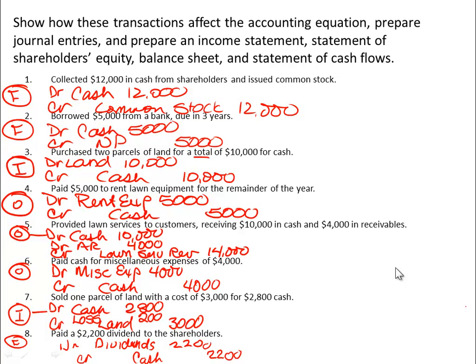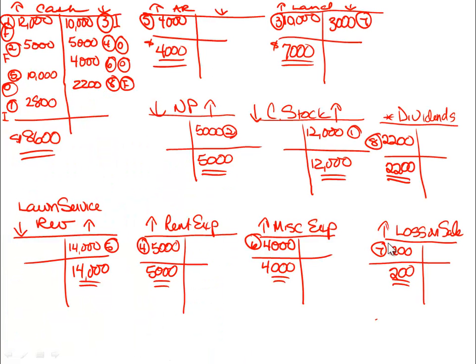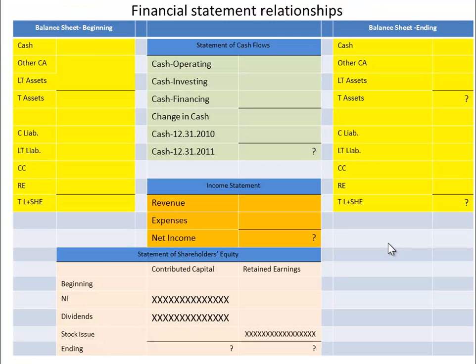So far in this accounting cycle problem, we have journalized entries or transactions — converted economic events into numeric values. We have posted them to the ledger or T-accounts. And now what we're going to do is take these balances from the ledger and place them into the financial statements.